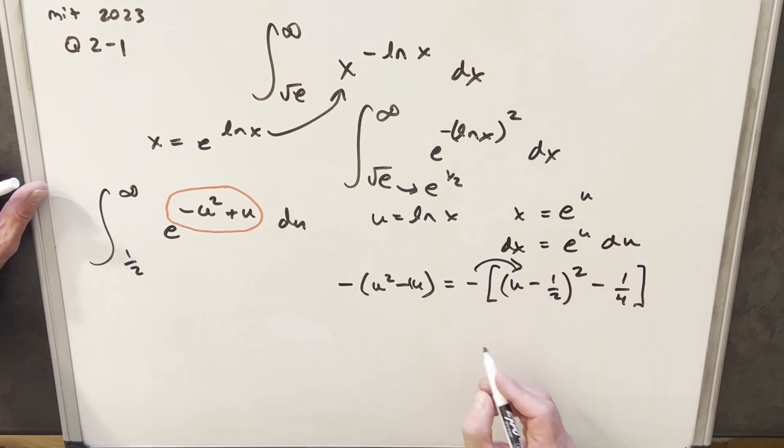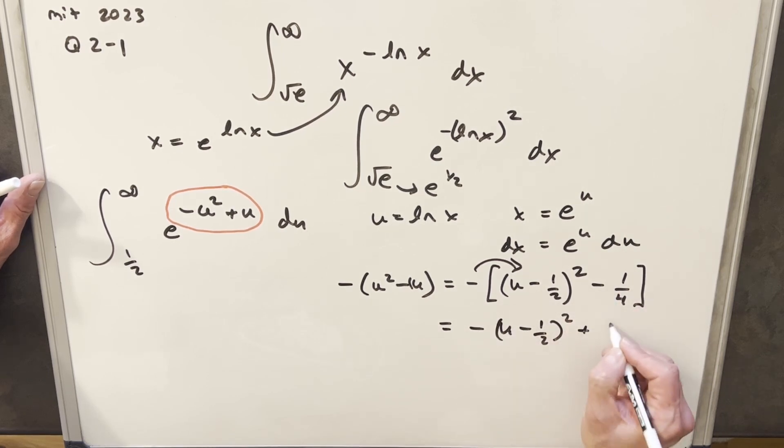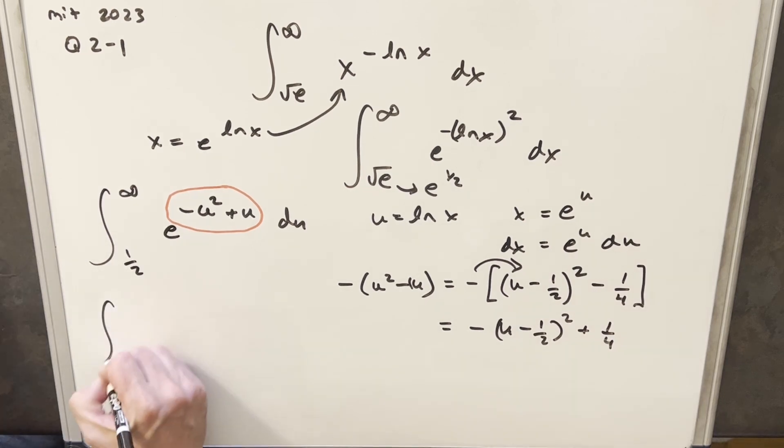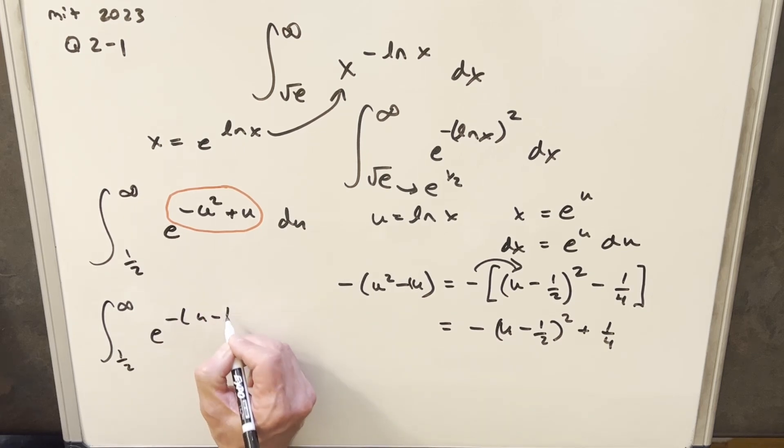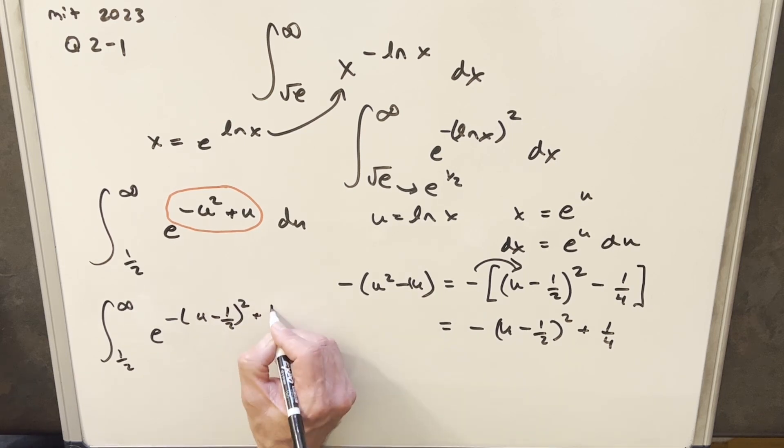Then I'm going to just distribute our minus sign back in to clean it up. So we're going to have minus u minus 1 half squared, and then this is going to become a plus 1 fourth. So now we're going to just take that and put it back into our integral and see what we have. So we're going to have this piece here, minus u minus 1 half squared. Then we're going to have a plus 1 fourth.